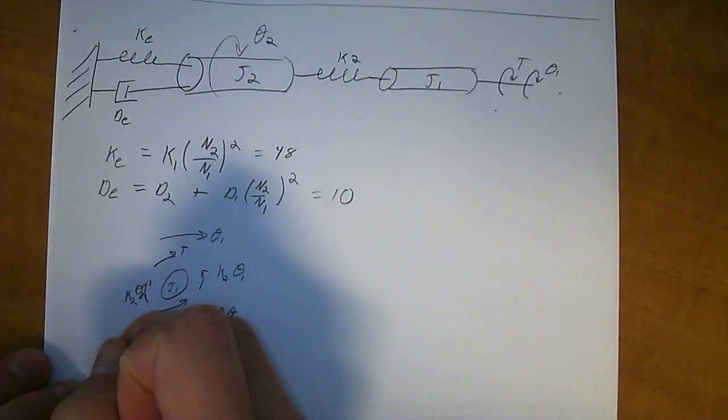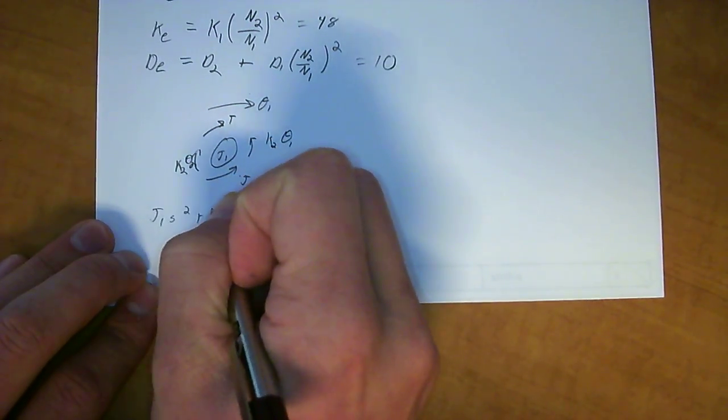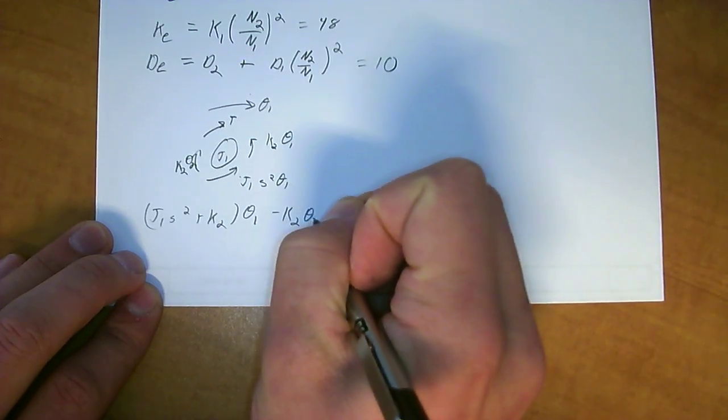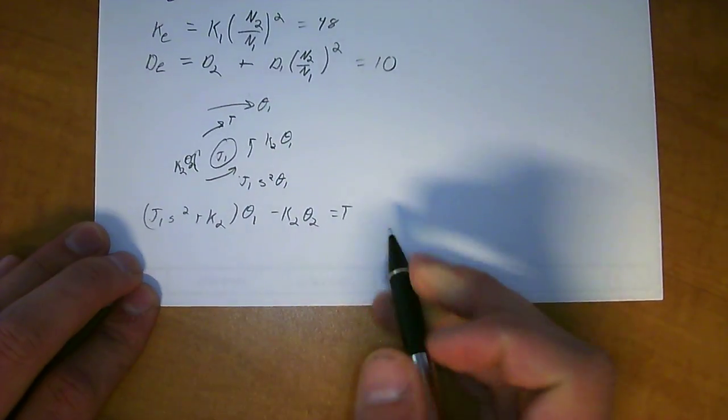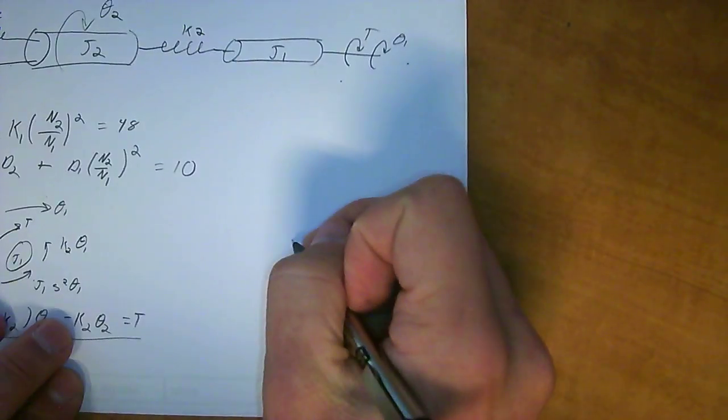So there's that. If you solve out that equation, you'll be getting - that will be J1 S squared plus K2 times Theta1, minus K2 Theta2, is equal to torque. So we're going to use that equation here in a minute.